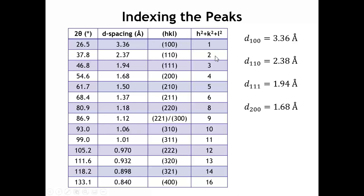We might also note that there are some integers that cannot be obtained by squaring three integers and summing them. For example, 7 is missing — there's no way to have three integers, square them, and add them together to get 7. Similarly, 15 is missing. We also see at least one example of two different sets of integers giving the same value of H squared plus K squared plus L squared: the 2, 2, 1 and the 3, 0, 0 both sum to 9. In a powder diffraction pattern, those two sets of peaks come at exactly the same spot and we won't be able to deconvolute them.